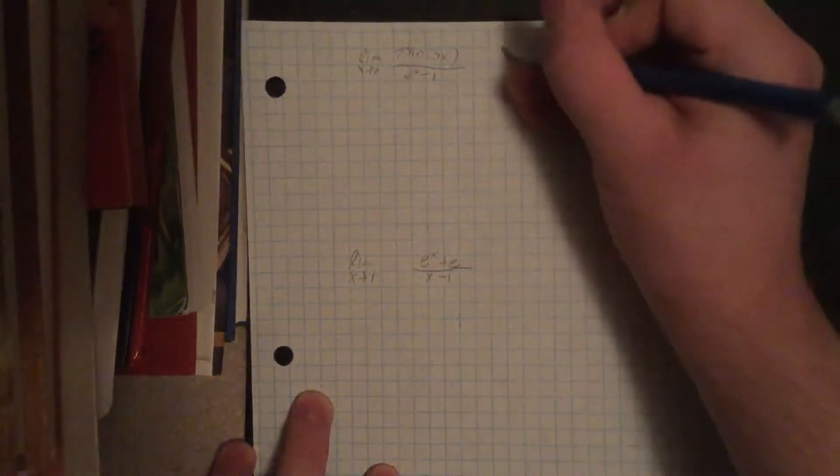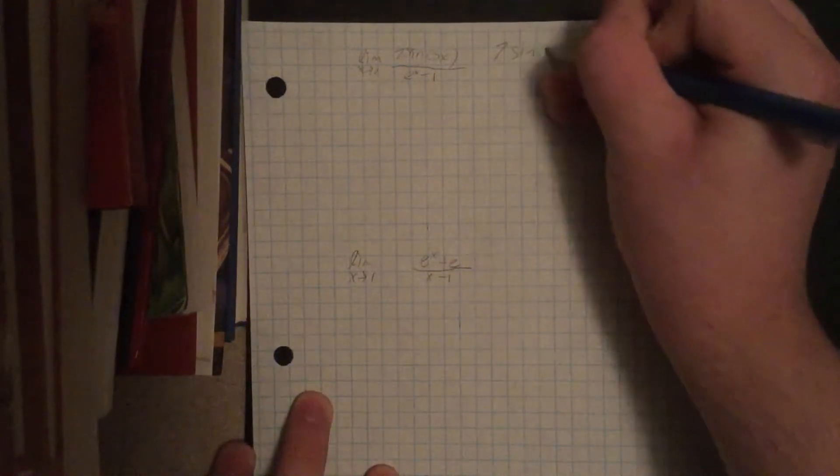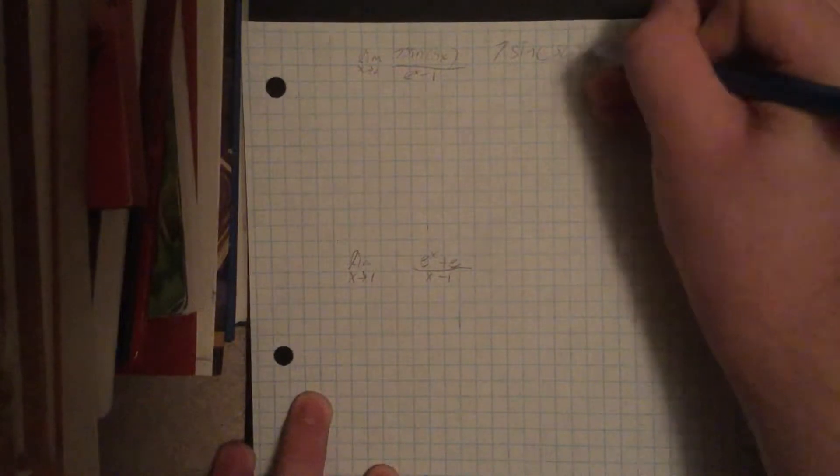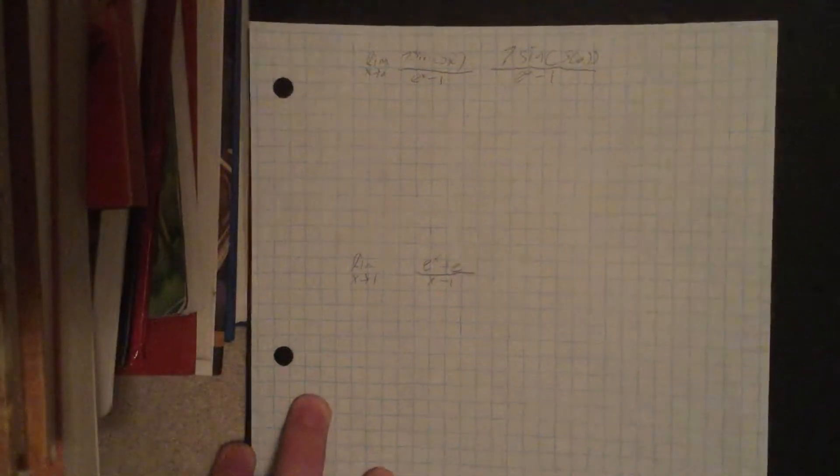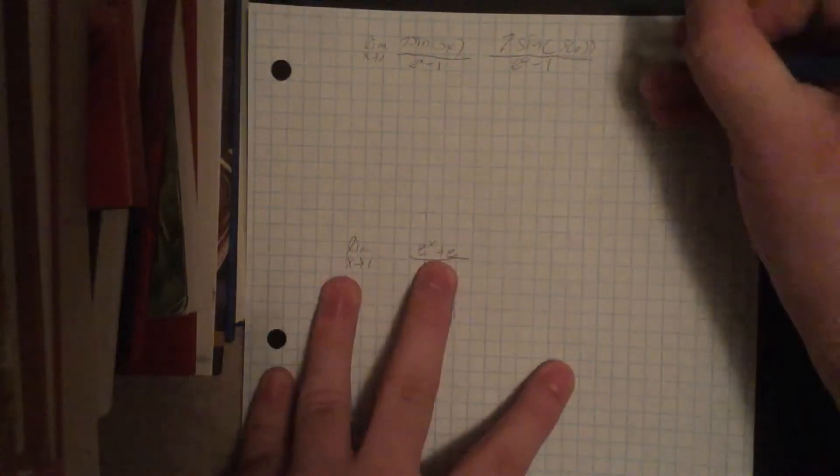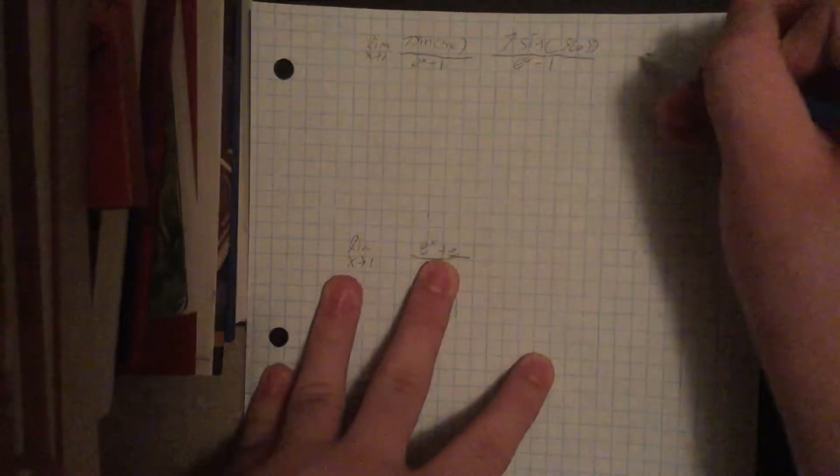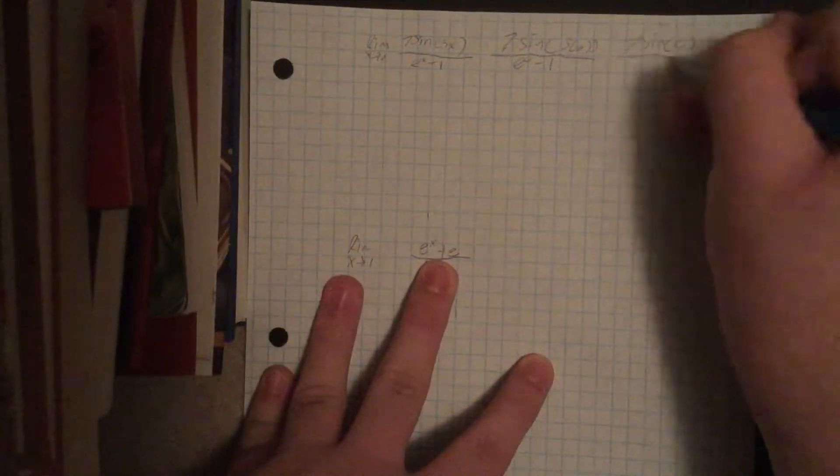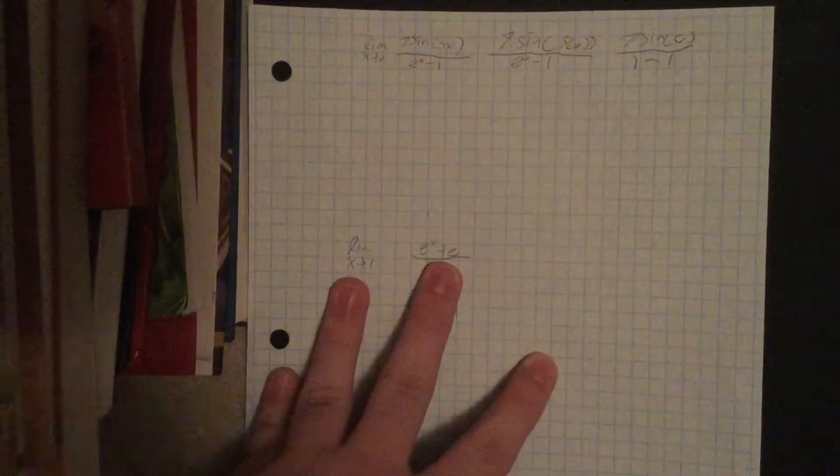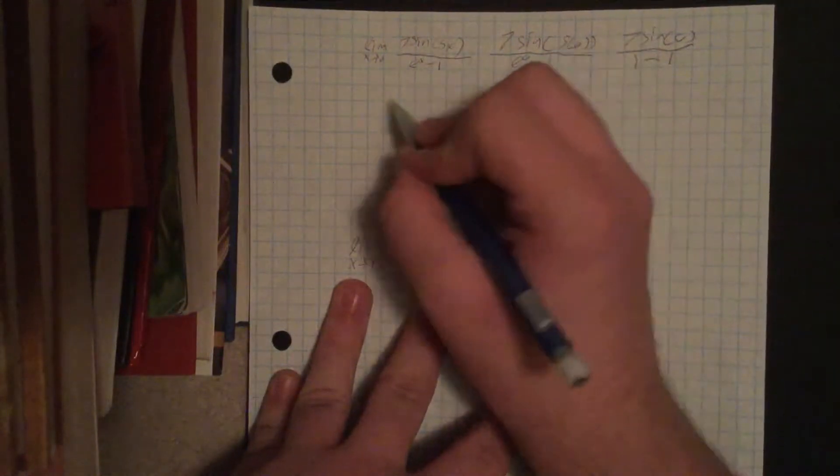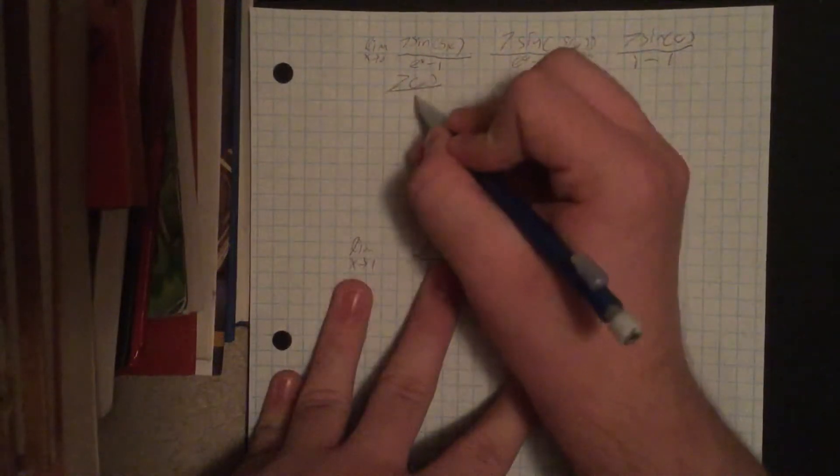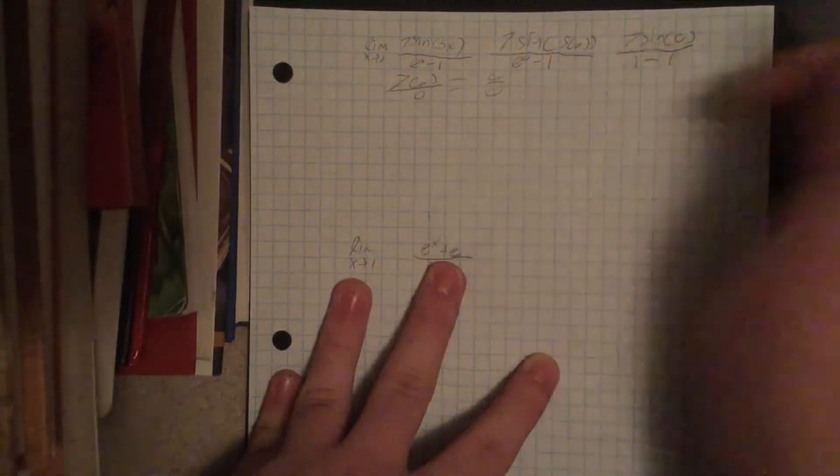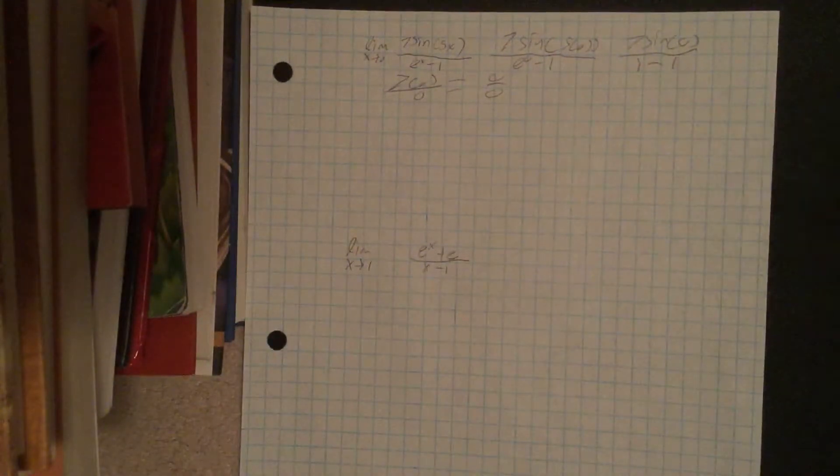So we'll start out by plugging in our variable. So 7 sine of 5 times 0 over e to the 0 minus 1. And we'll simplify this to 7 sine of 0 over 1 minus 1, which will get us 7 times 0 over 0, which will get us 0 over 0. So when we get 0 over 0, we know we can do Lope-Tol's rule.